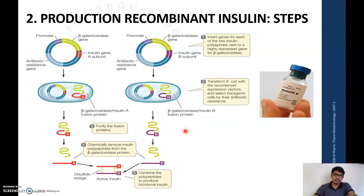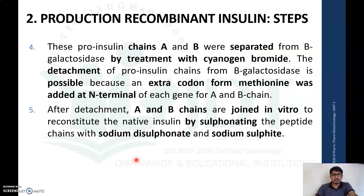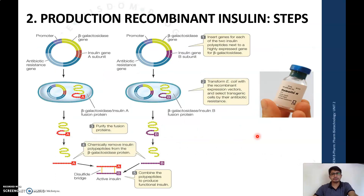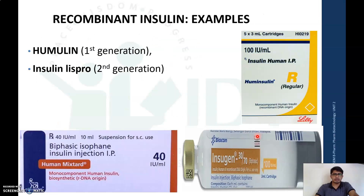The E. coli is cultured separately in separate media and produces a chain combined with the beta-galactosidase enzyme. To separate the beta-galactosidase enzyme, we treat with cyanogen bromide, obtaining separate chain A and chain B. These chains are then joined by disulfide bonds by sulfonating with sodium disulfonate and sodium sulfate. This completes the steps involved in the production of insulin by recombinant DNA technology.